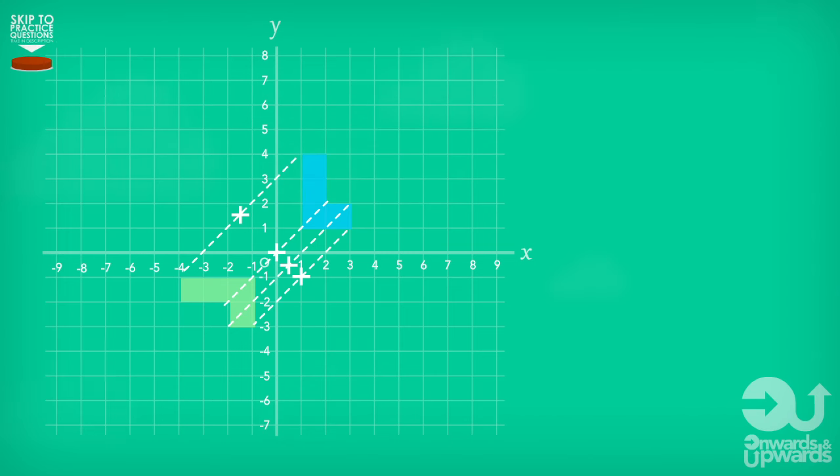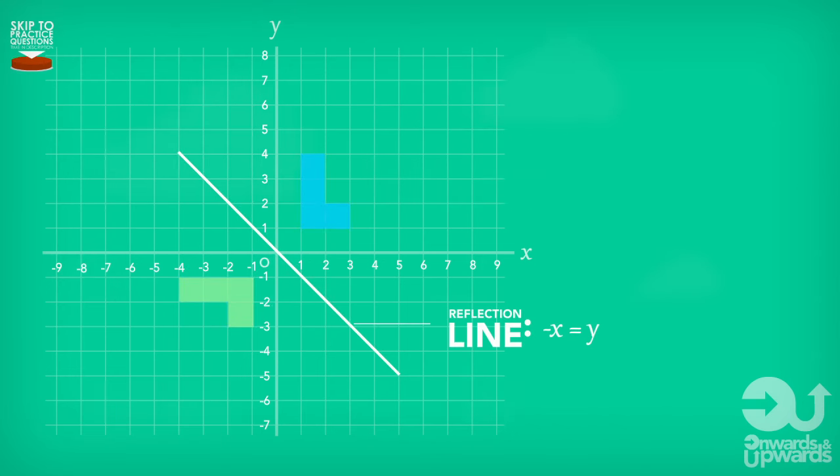All we have to do is match up these halfway points, and this will reveal our reflection line. And just like that, question done, onto the next.